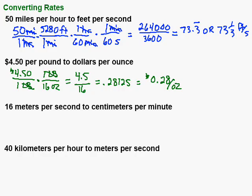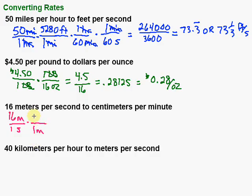Let's take a look at the next one. We've got 16 meters per second, and I want to convert that to centimeters per minute. First step: set up the original ratio we're given — 16 meters over 1 second. I want to convert to centimeters per minute. Starting with meters into centimeters: 1 meter equals 100 centimeters. I put 1 meter on the bottom so it cancels with the meter on top. 1 meter equals 100 centimeters. The meters cancel.